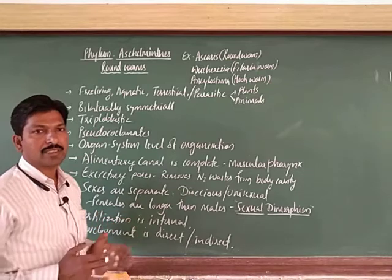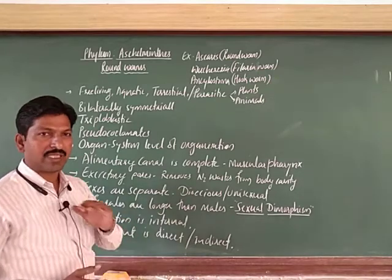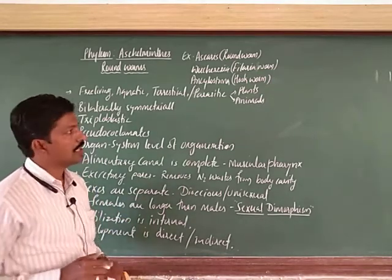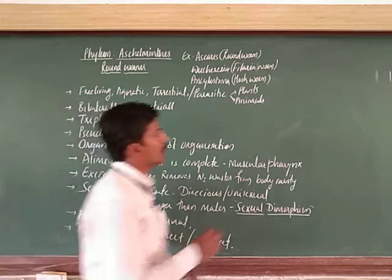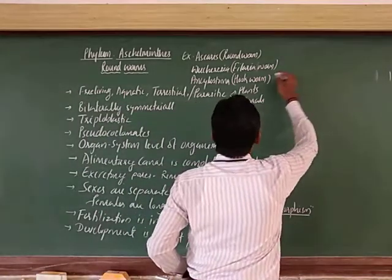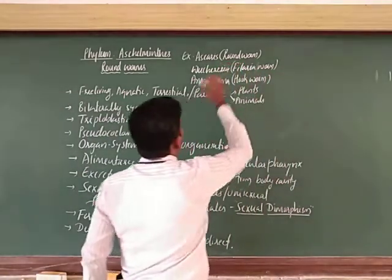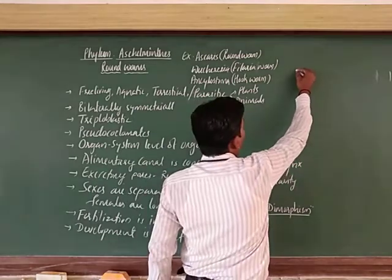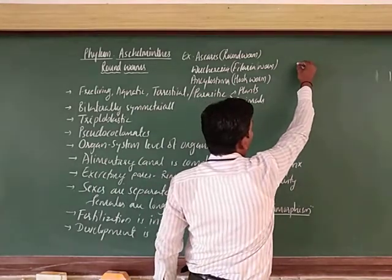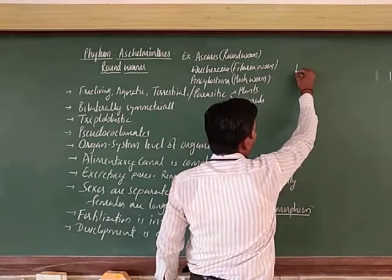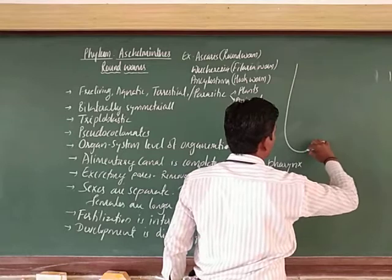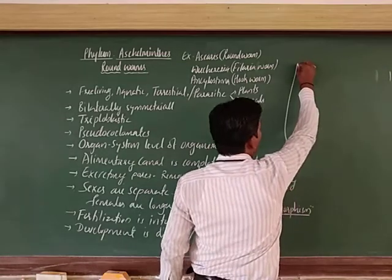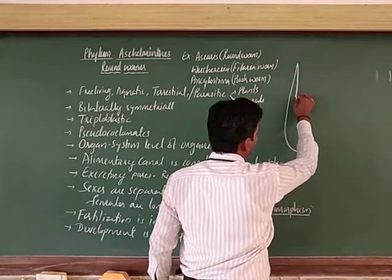It appears cylindrical. When you take the cross section, it is circular. For example, you can consider Ascaris. Ascaris body is somewhat cylindrical. This is the Ascaris.